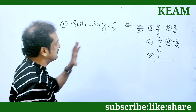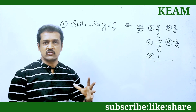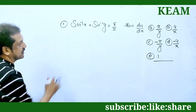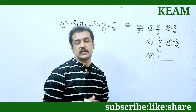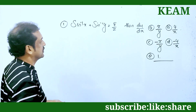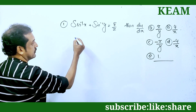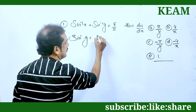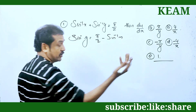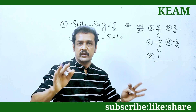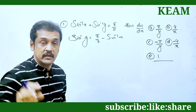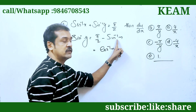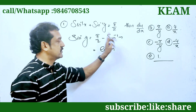sin x plus sin y is equal to π/2, find dy/dx. sin x plus sin y equals n — that is, sin y equals π/2 minus sin x. Now, π/2 minus sin x equals cos x. So π/2 minus cos x is sin x.